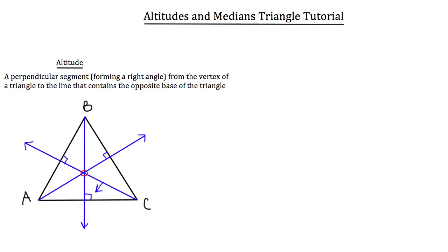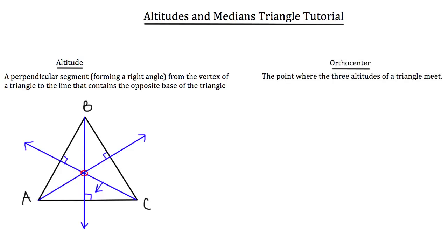We're going to talk about that in just a moment. It's important to note that not every triangle will have that intersection point inside the triangle — for some triangles it will be outside or even on the triangle. That point of intersection is known as the orthocenter: the point where the three altitudes of a triangle meet.